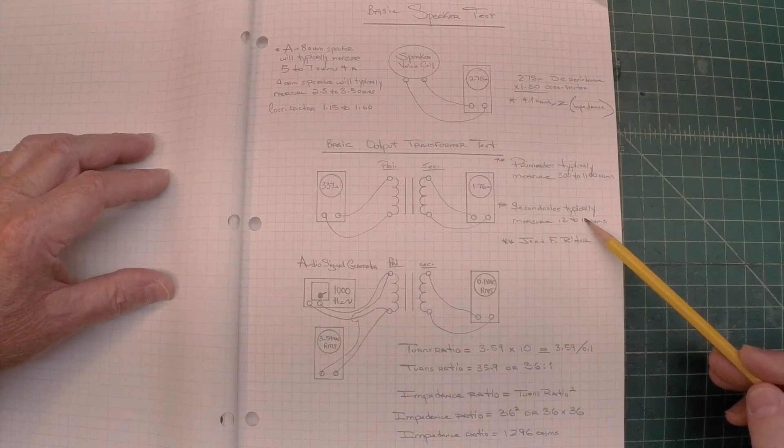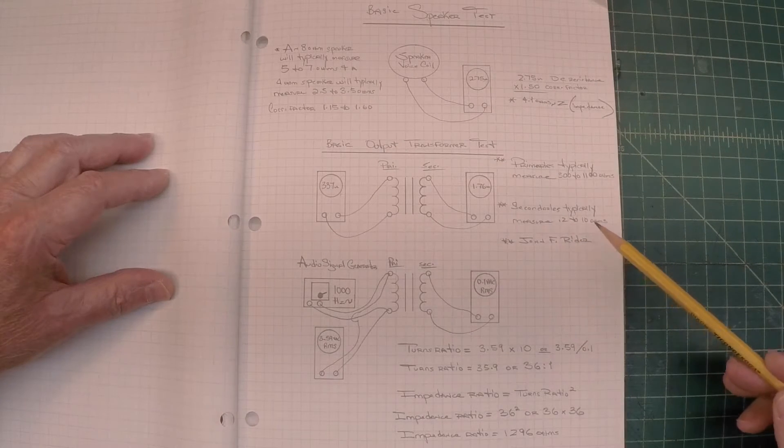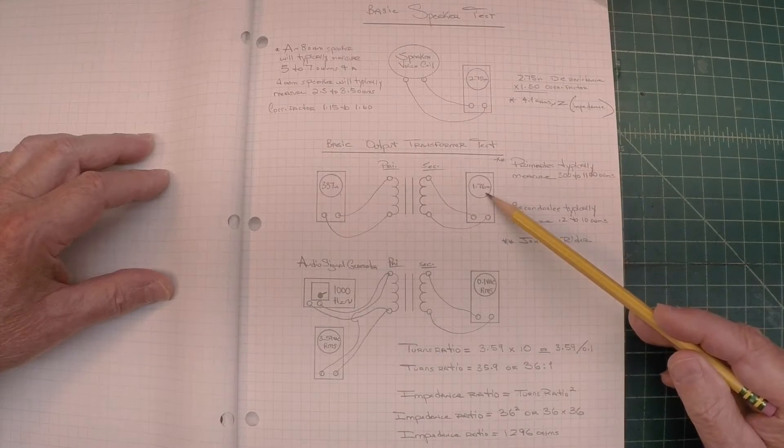And secondaries typically fall in 0.2 to 10 ohms, and you can see I'm in that window.